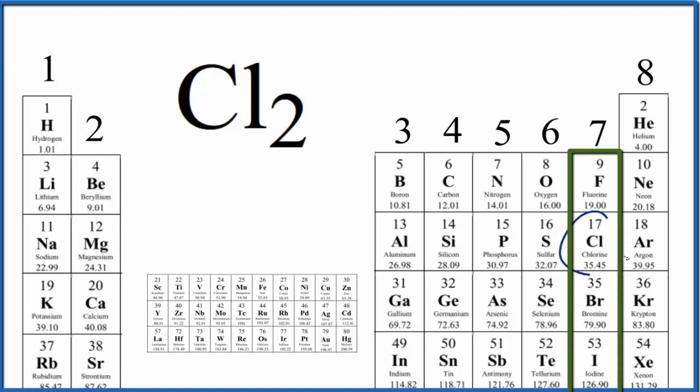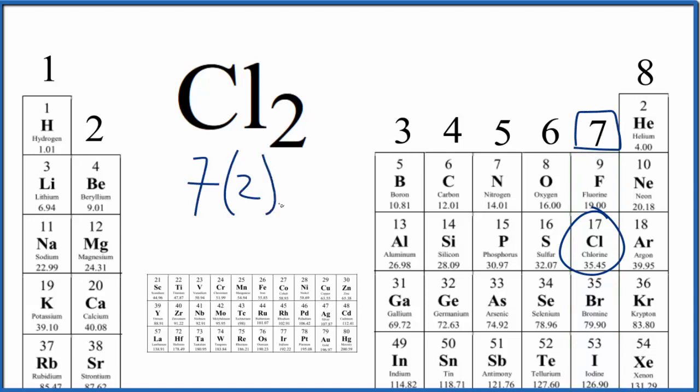Chlorine is over here in group 17, sometimes called 7a, so it will have seven valence electrons. We have two chlorine atoms, so seven times two equals 14. So we have a total of 14 valence electrons for the Cl₂ Lewis structure.